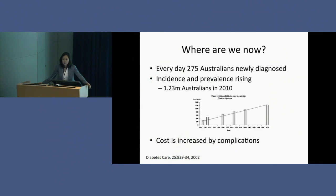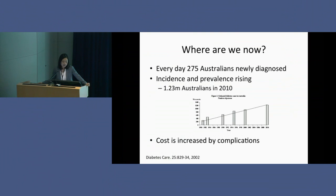So what about today? This is Australian data and we know that approximately 300 people every day are newly diagnosed with diabetes, so it's a really common illness. The incidence and prevalence continues to rise and it affects over a million Australians — a substantial proportion of the population. If you have diabetes-related complications, it's costly not just to yourself but to the community as a whole.